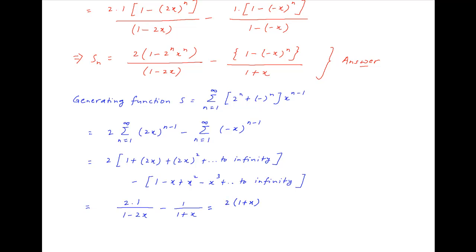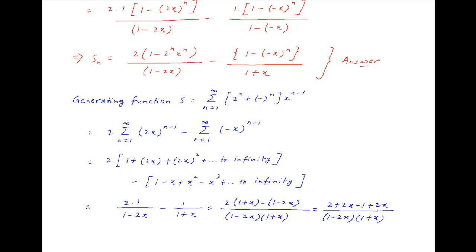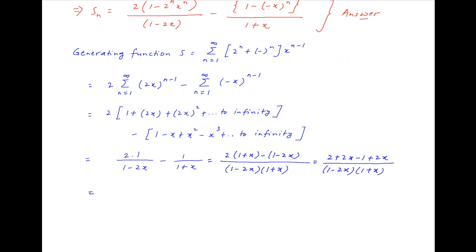This is equal to 2 times (1 plus x minus (1 minus 2x)) divided by (1 minus 2x) times (1 plus x). Therefore, the generating function S is equal to (1 plus 4x) divided by (1 minus 2x)(1 plus x), and this is the required answer.